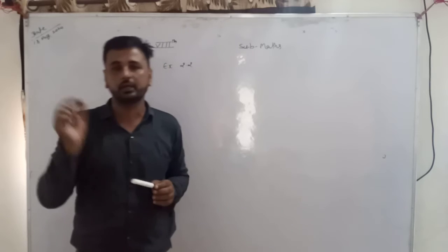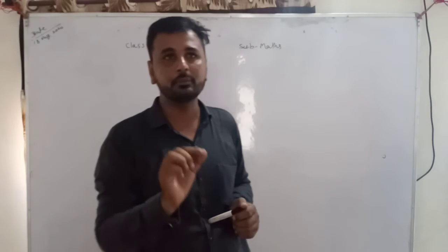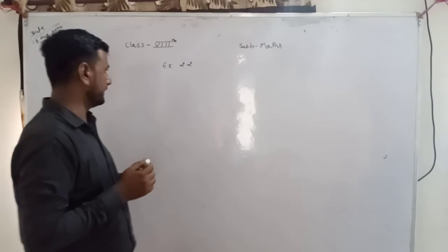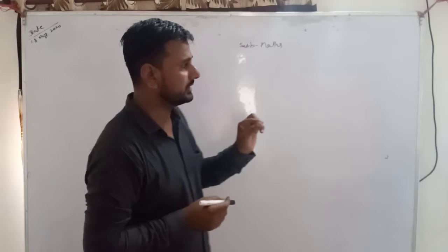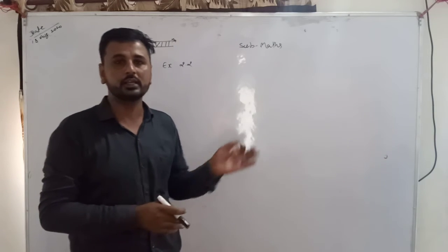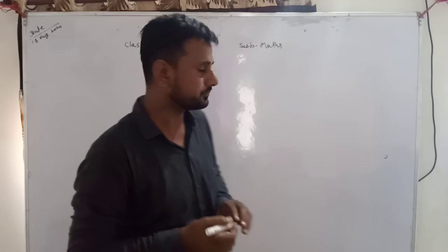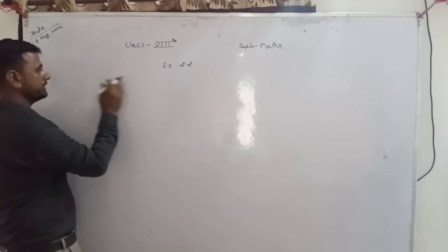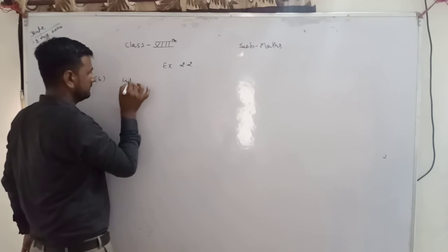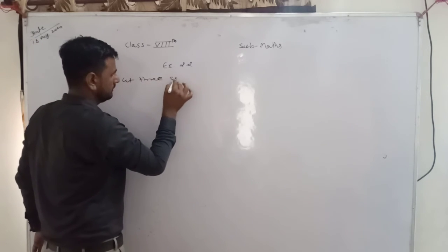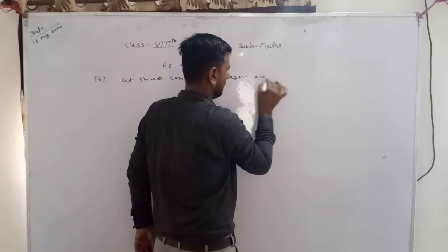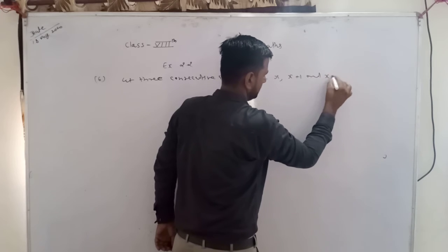तो ऐसे अपने को first number पता नहीं होता है, तो first number अपने let करते हैं x। Second number क्या हो जाएगा: x plus 1। Third क्या हो जाएगा: x plus 2। यह अपने add करते आएंगे। अगर consecutive integer में odd और even आ जाएं तो first number x, second x plus 2, third x plus 4। तो three consecutive integers: x, x plus 1, and x plus 2।